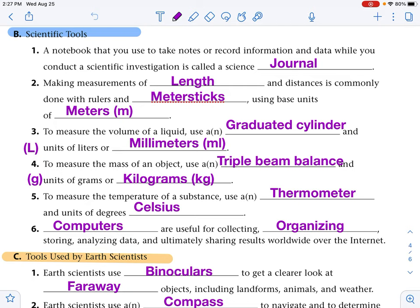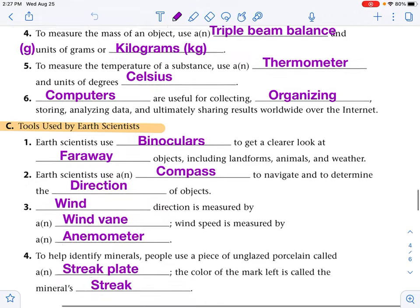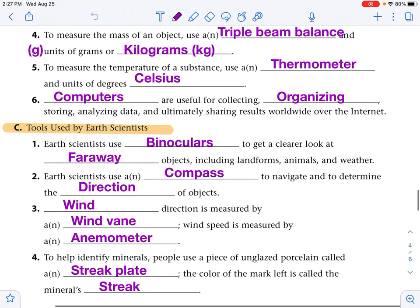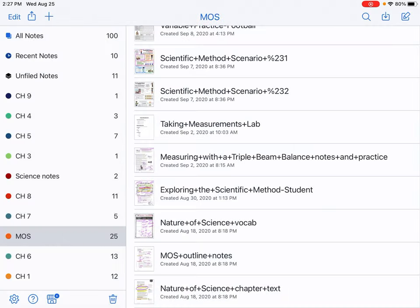So a thousand grams would be a kilogram. To measure the temperature of a substance, use a thermometer and units of degrees Celsius. Computers are useful for collecting, organizing, storing, analyzing data, and ultimately sharing results worldwide over the internet. So make sure that your outline notes are filled out for this section. Stop this video if you need to. We have one little section left on tools used by earth scientists, and then we're finished.